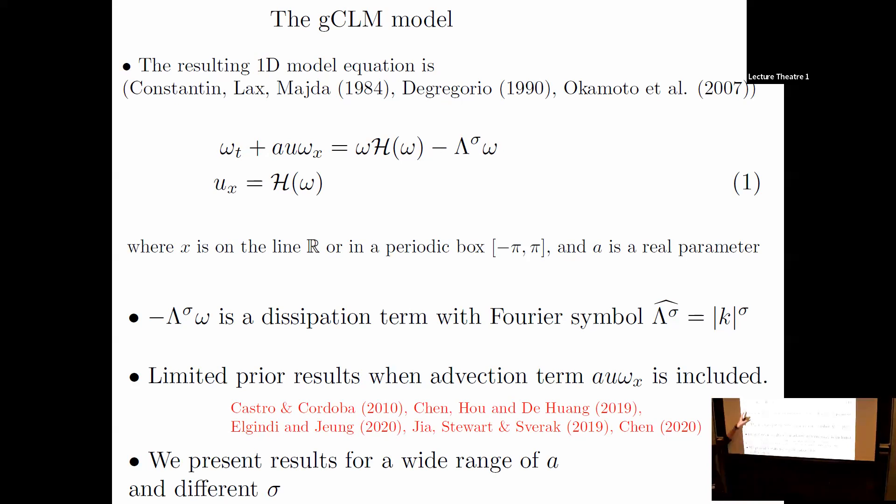The final model is here. A little history: Constantine, Lax, and Majda started with A equals zero and no dissipation. De Gregorio added an advection term but without the A. Okamoto added the advection term with A, giving rich dynamics. We added this dissipation term. We consider this equation both on the real line and in the periodic box. A main point of the talk is: what is the difference?